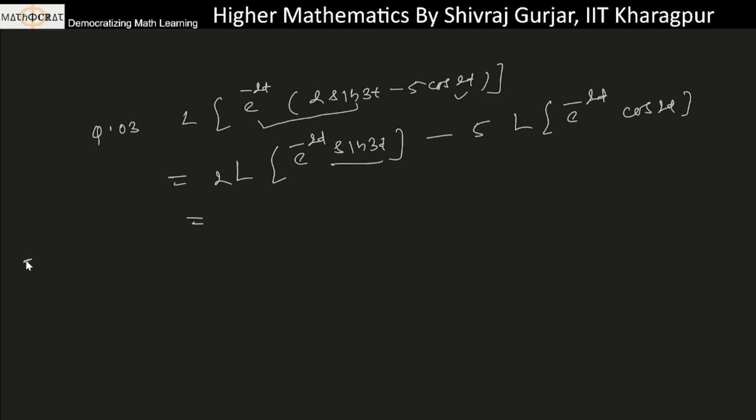Laplace of sin 3t means a divided by p squared plus a squared. This will be f(p minus a), that is f(p plus 2). For cos 2t, let's call it g(t). By the shifting theorem, a is minus 2 here. g(p) is p divided by p squared plus 4, because a is 2 here.